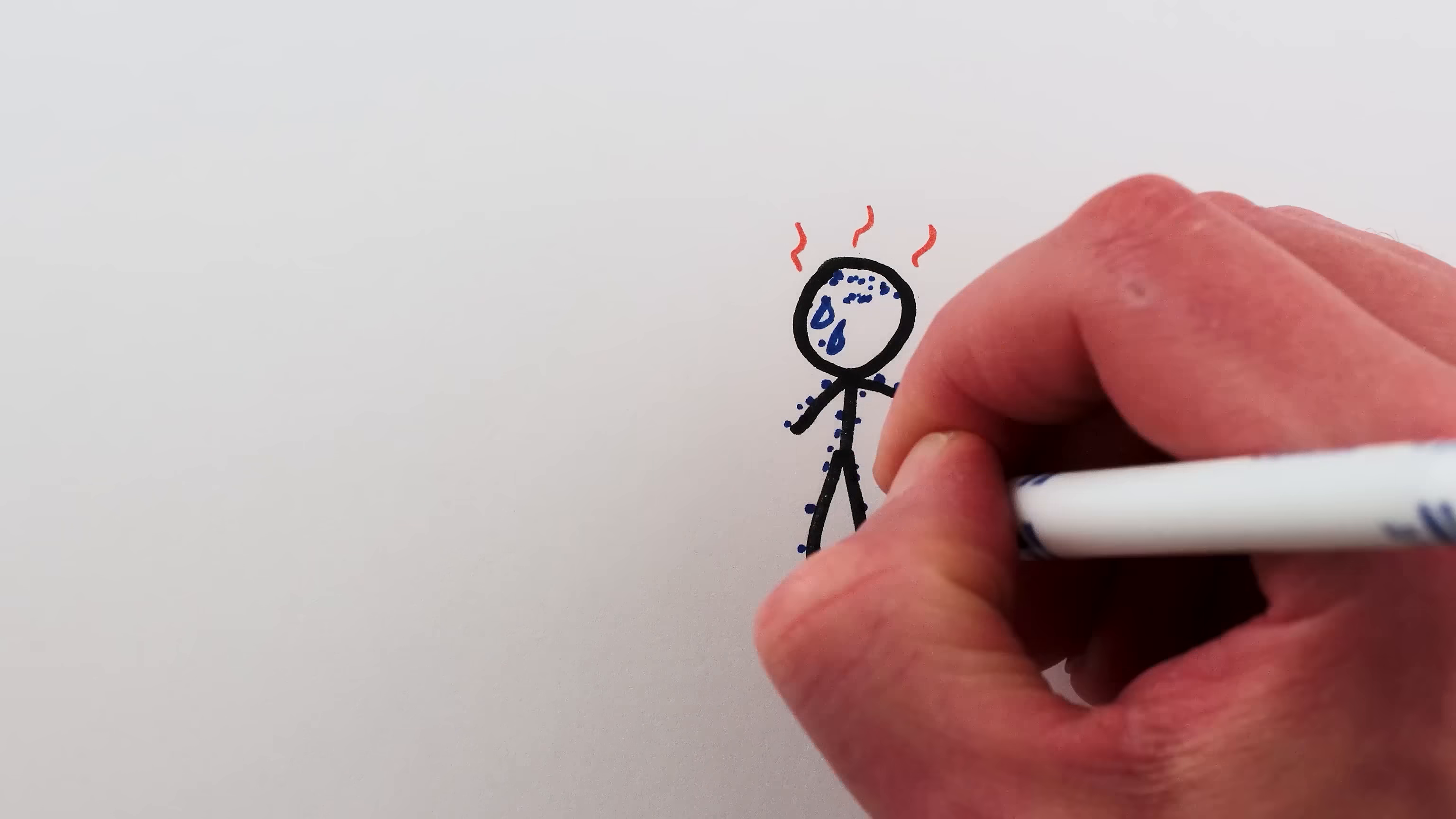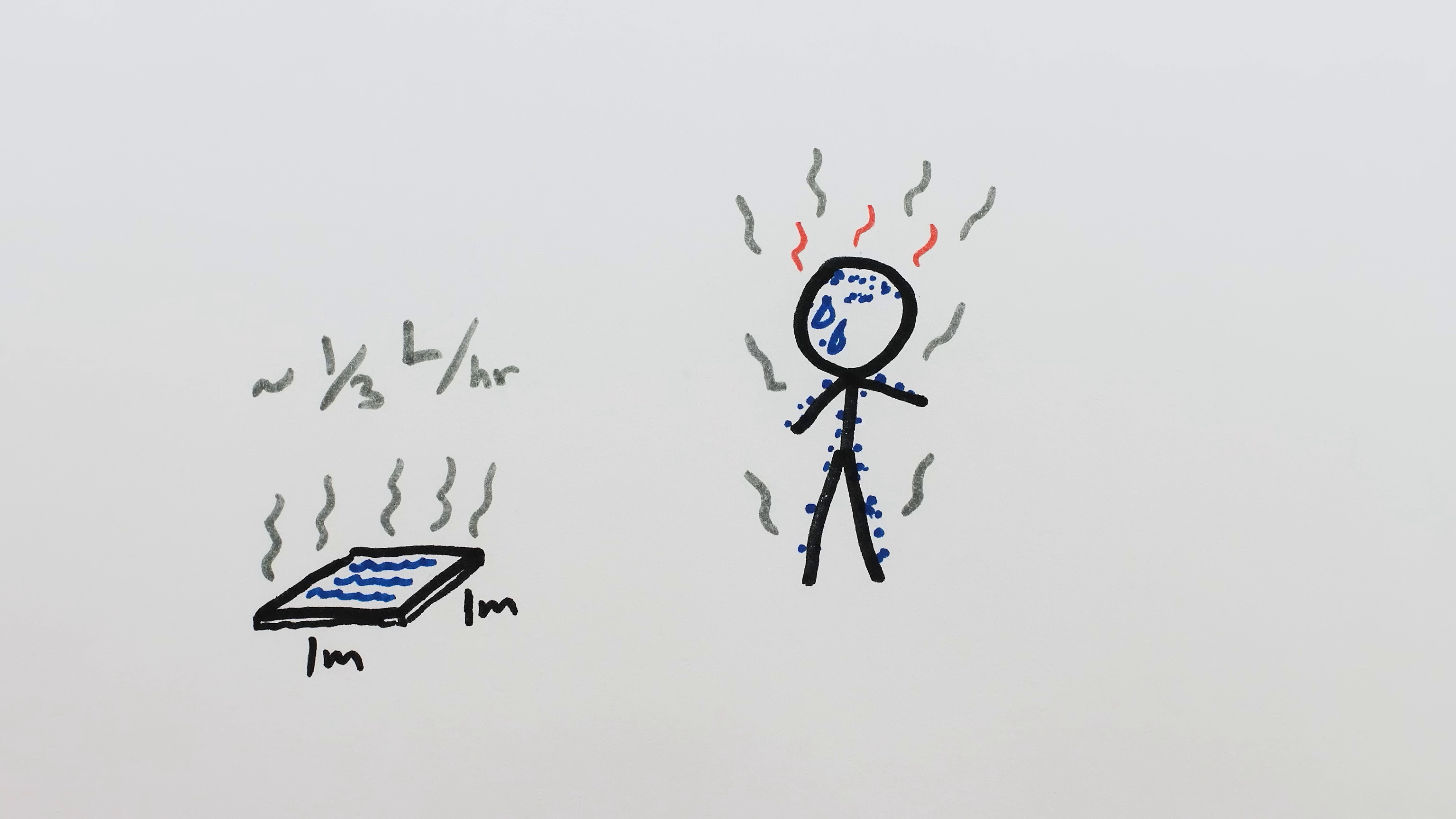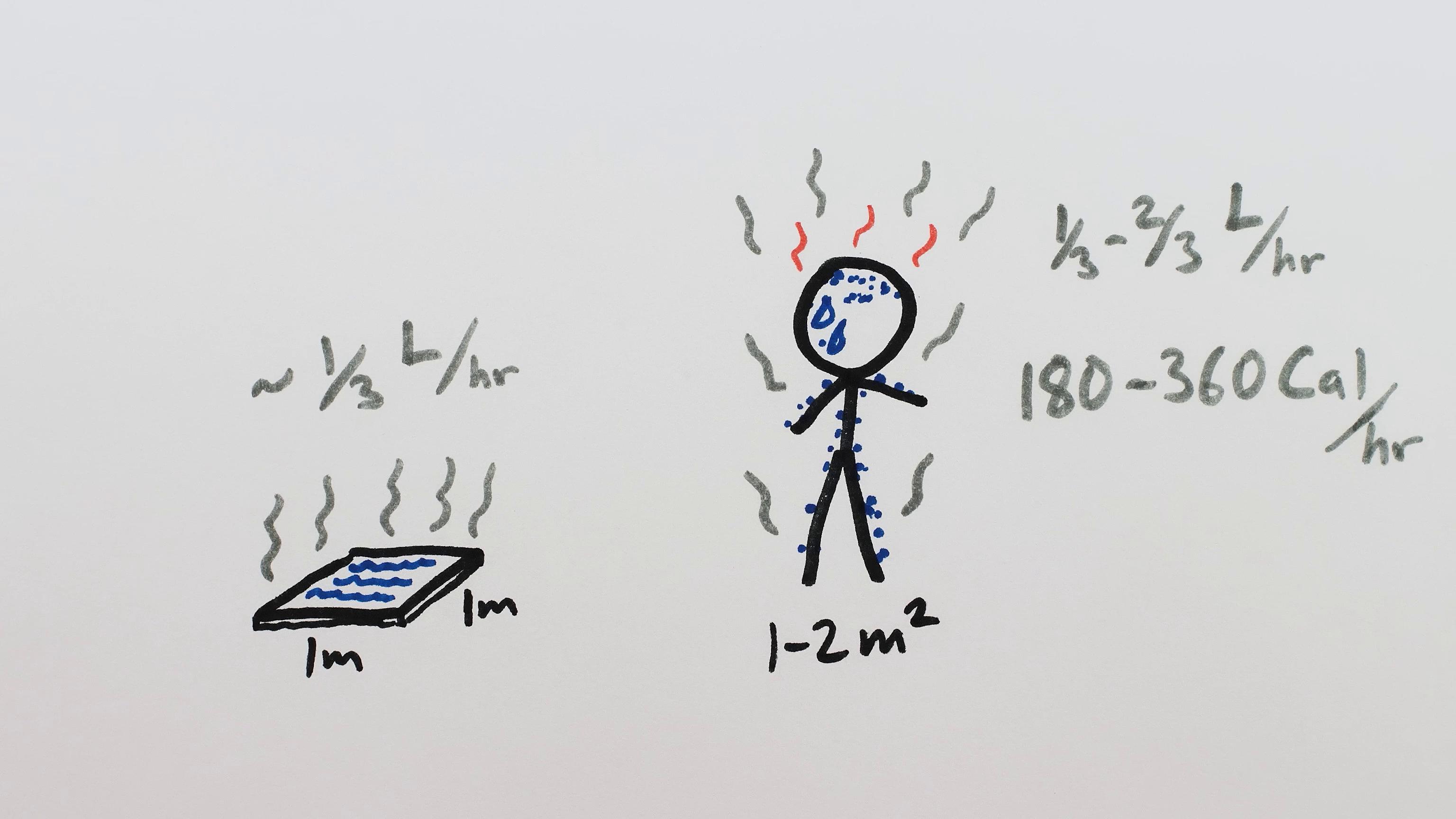But a human body can't necessarily evaporate a liter of water every hour. A square meter under room temperature conditions will only evaporate about a third of a liter per hour, and the surface area of a human is only between one and two square meters. So we could expect a sweaty human body to lose at most maybe 180 to 360 calories of heat every hour from evaporative cooling, which is still 5 to 10 times more cooling power than liquid cooling.